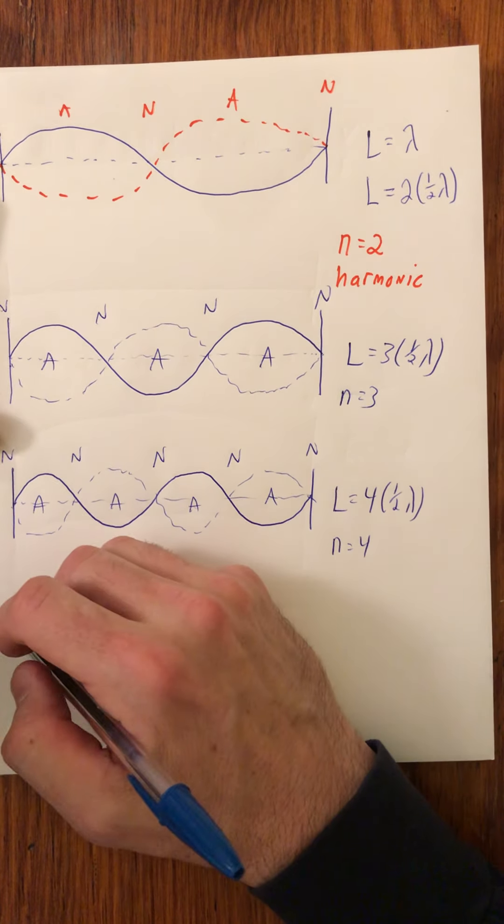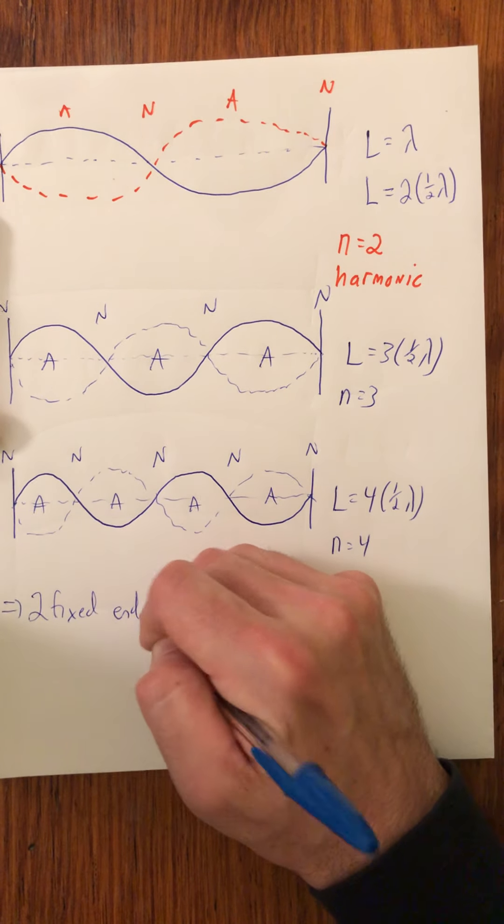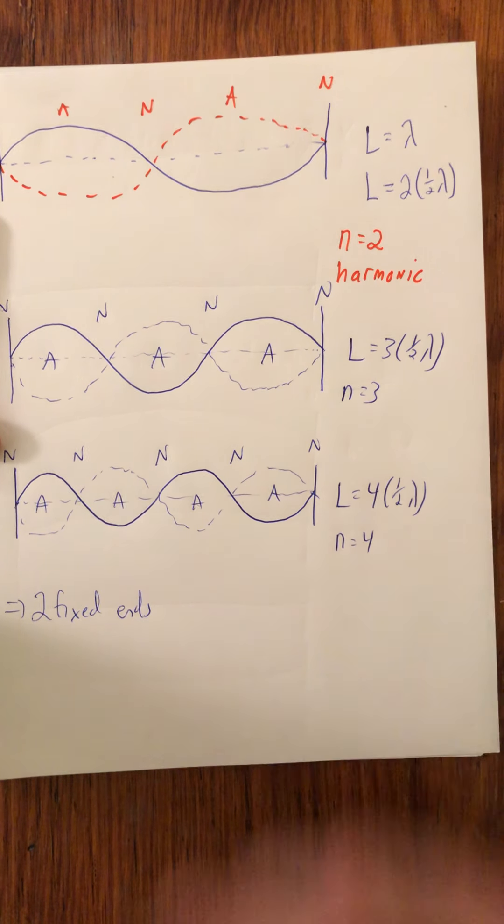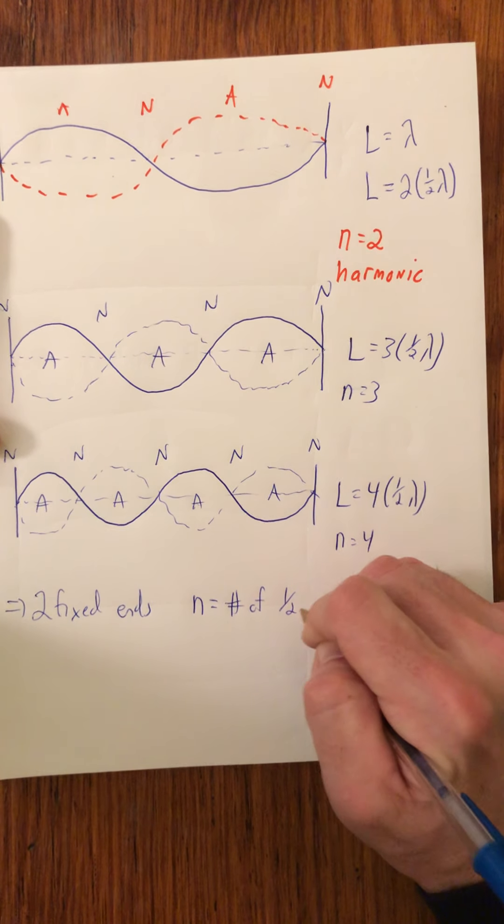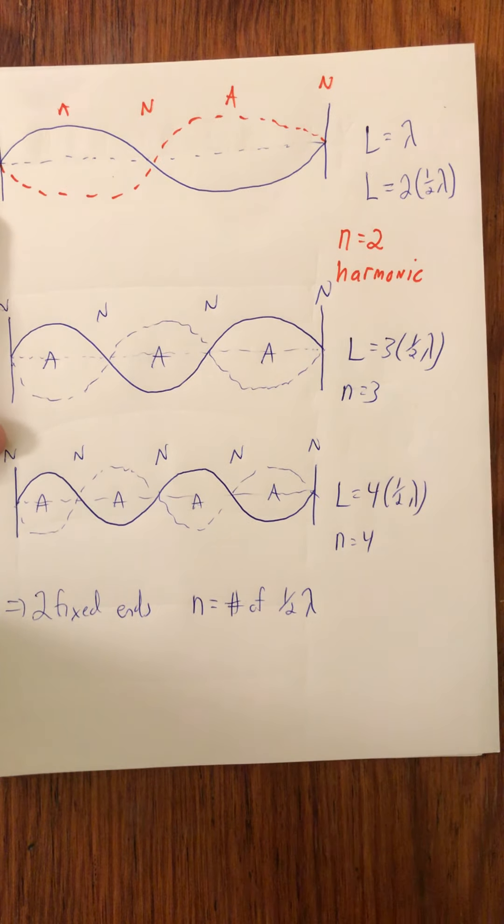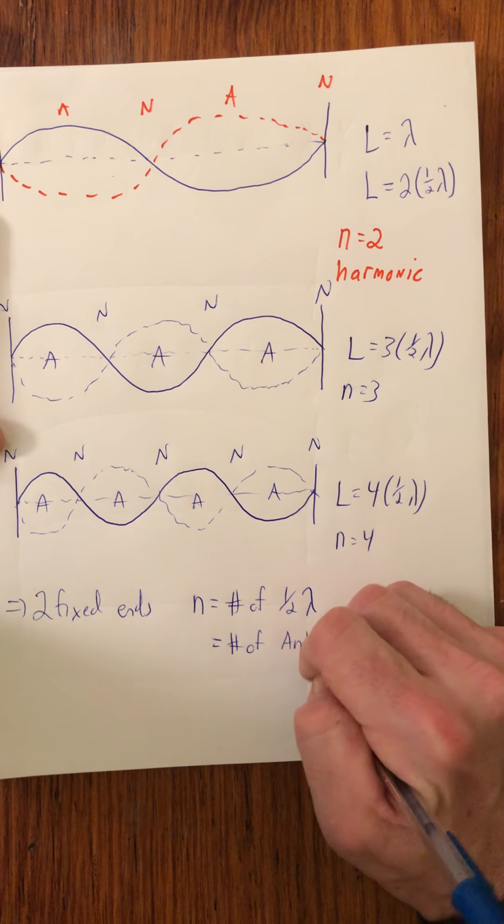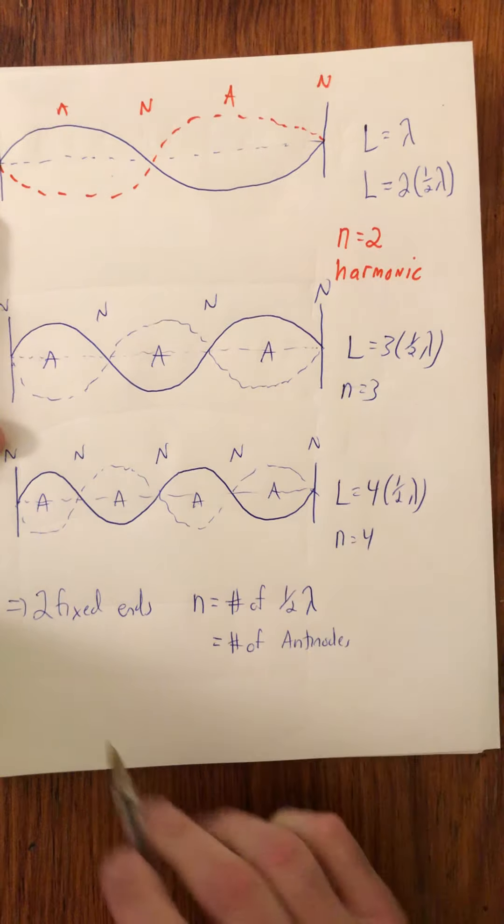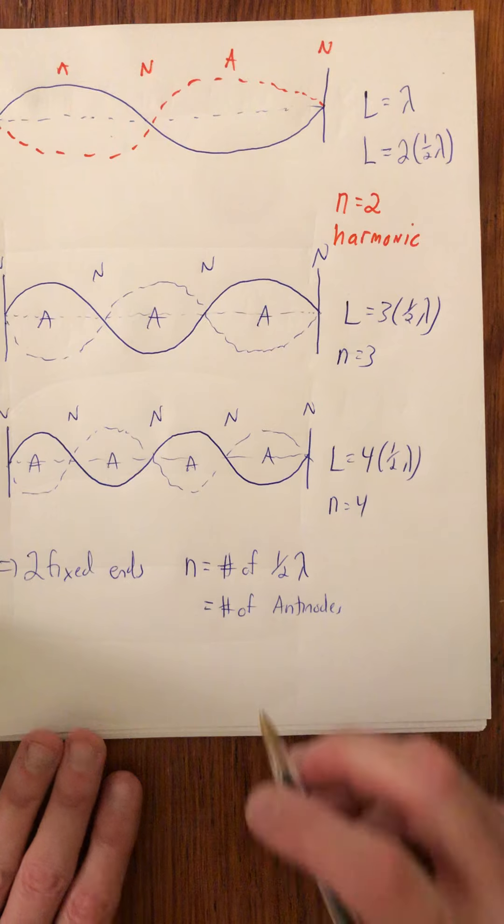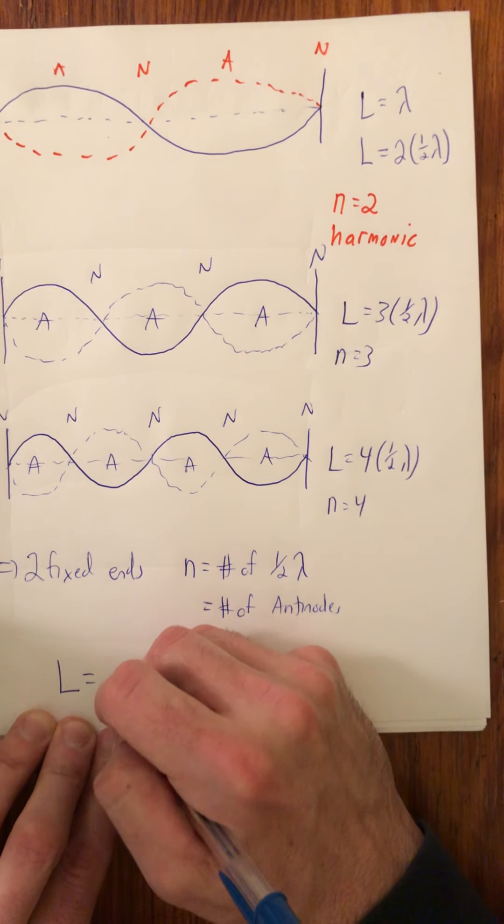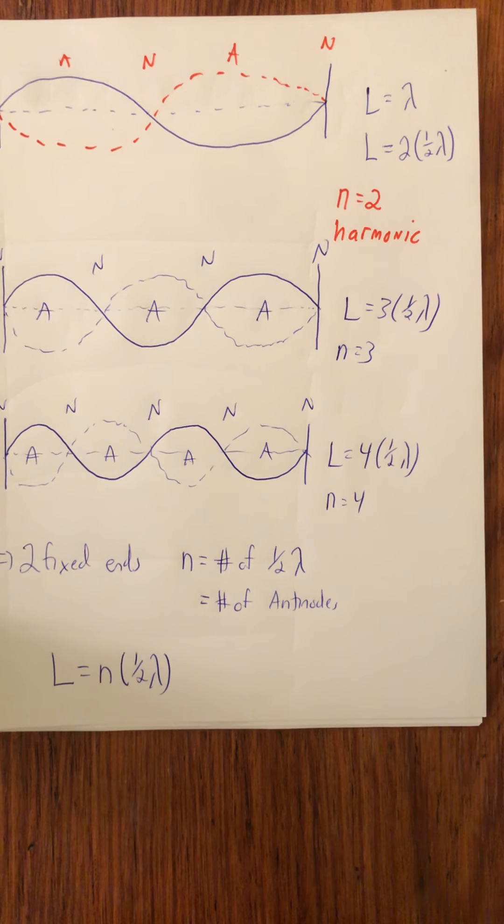So hopefully what you're seeing here is with two fixed ends as the boundary condition, that the harmonic number n is equal to the number of half wavelengths, which happens to be equal to the number of antinodes. Now that's going to be very specific to this boundary condition, so we don't want to generalize yet. But for now, we can say that L equals n times one half lambda.